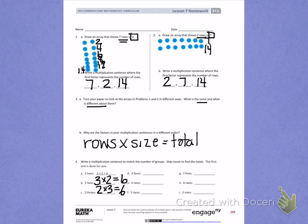We're using the same factors, but we've rotated our arrays 90 degrees to represent two different problems. Try the rest of number 4 on your own, skip counting to find the answers.